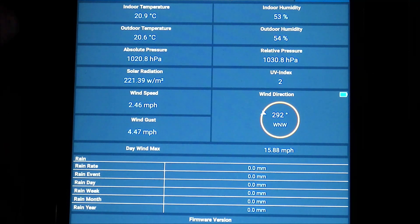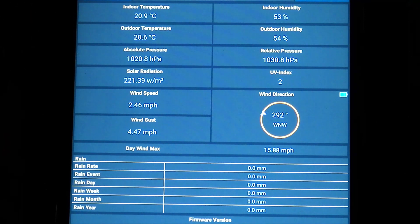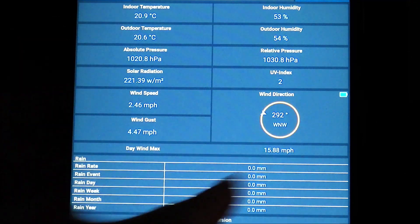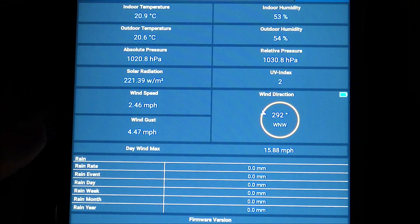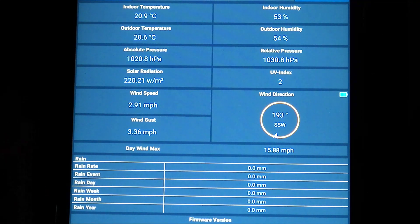It shows indoor temperature and humidity, outdoor temperature and humidity, absolute and relative pressure which you can adjust depending on sea level, solar radiation, UV index, wind speed and wind gust speed and direction. Also below is the daily wind maximum and all the rainfall events.